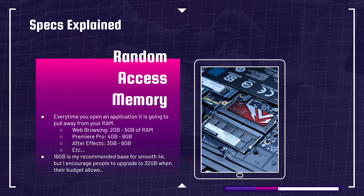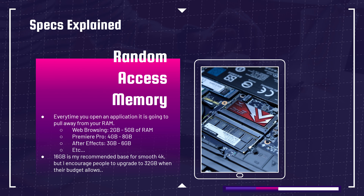Let's jump into Premiere Pro and start doing some editing — you're going to use anywhere from 4 to 8 gigs of RAM. Now let's say you need to pull in some motion graphics and open up After Effects — you're going to be using 3 to 6 gigs of RAM. So right there, you've used almost or all of your 16 gigs of RAM.